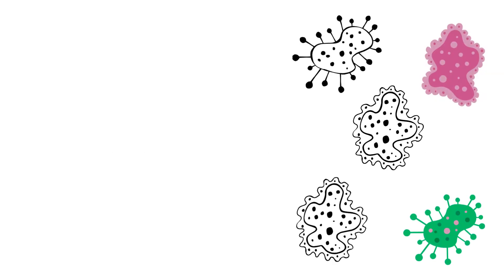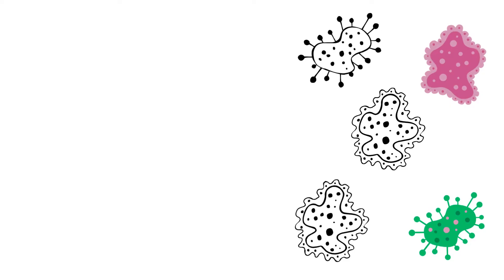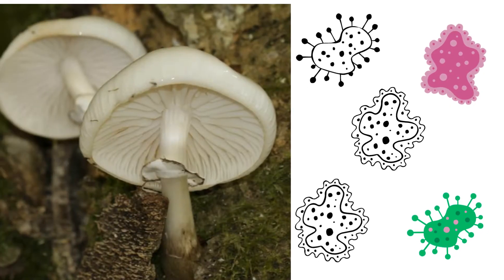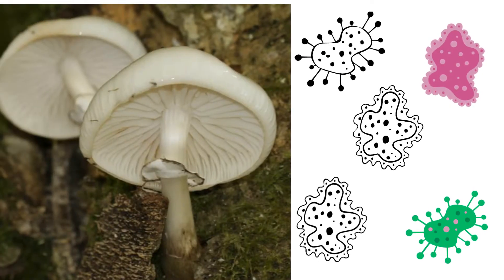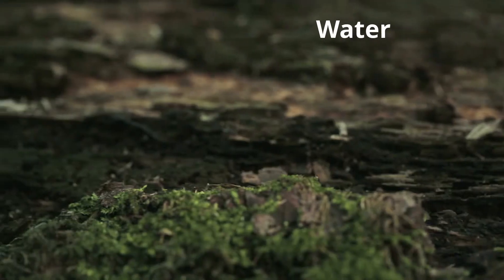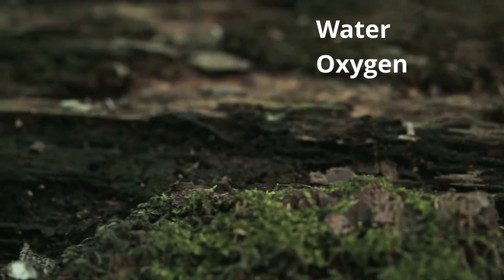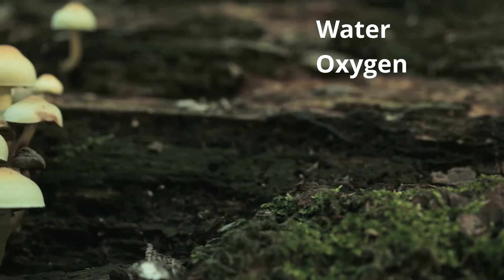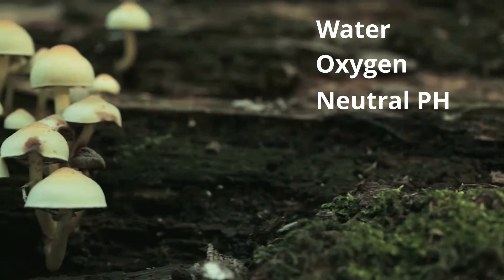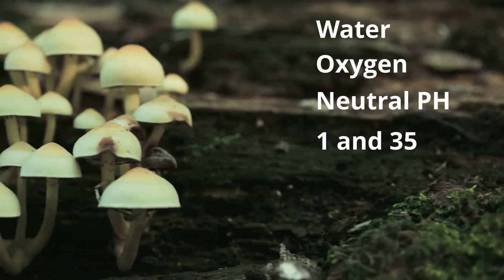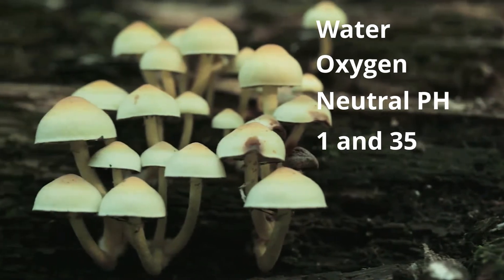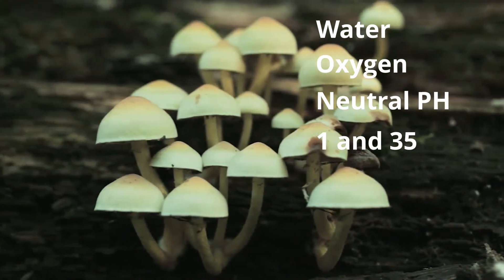Major Saprotrophs include bacteria and fungi. Saprotrophs need water, oxygen, a neutral pH, and a temperature between 1 and 35 degrees Celsius to do their job.